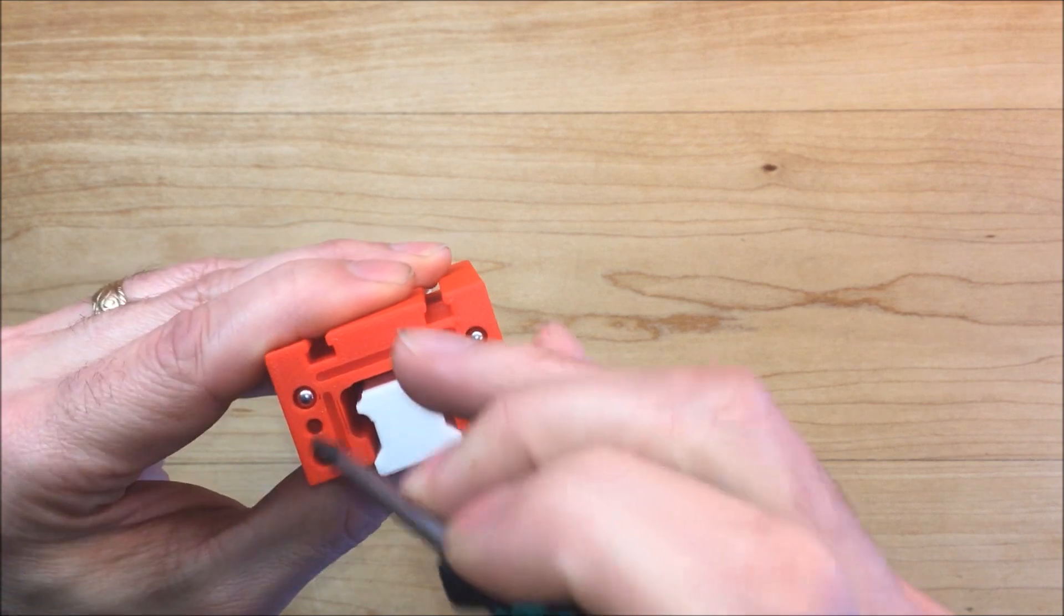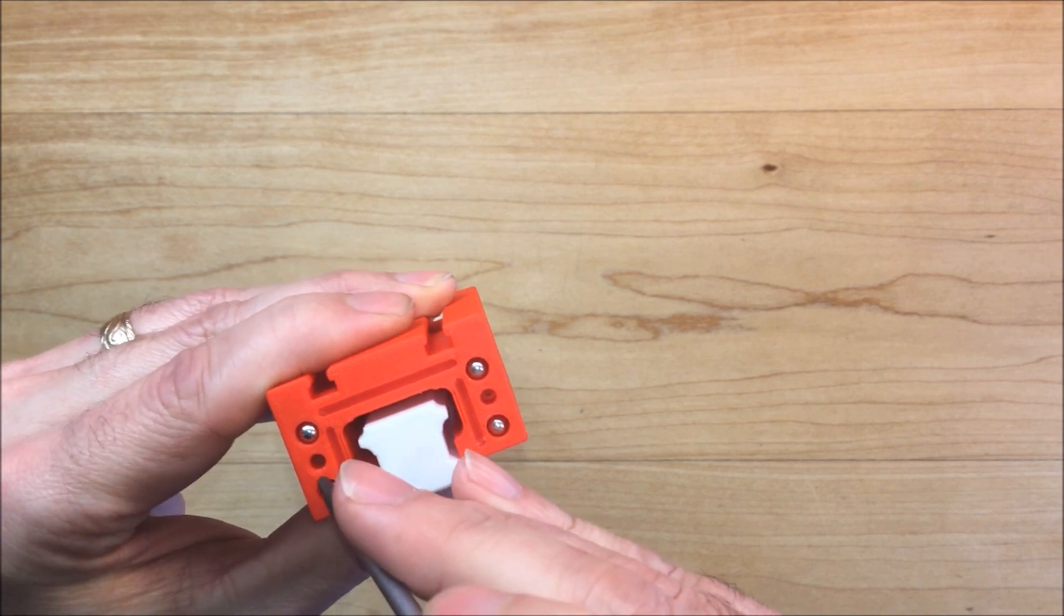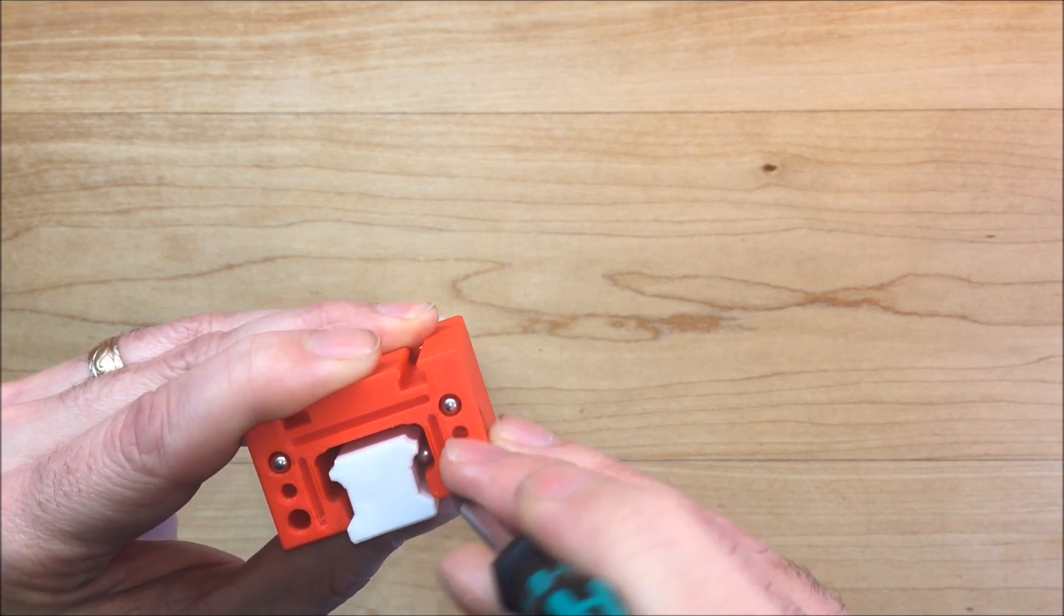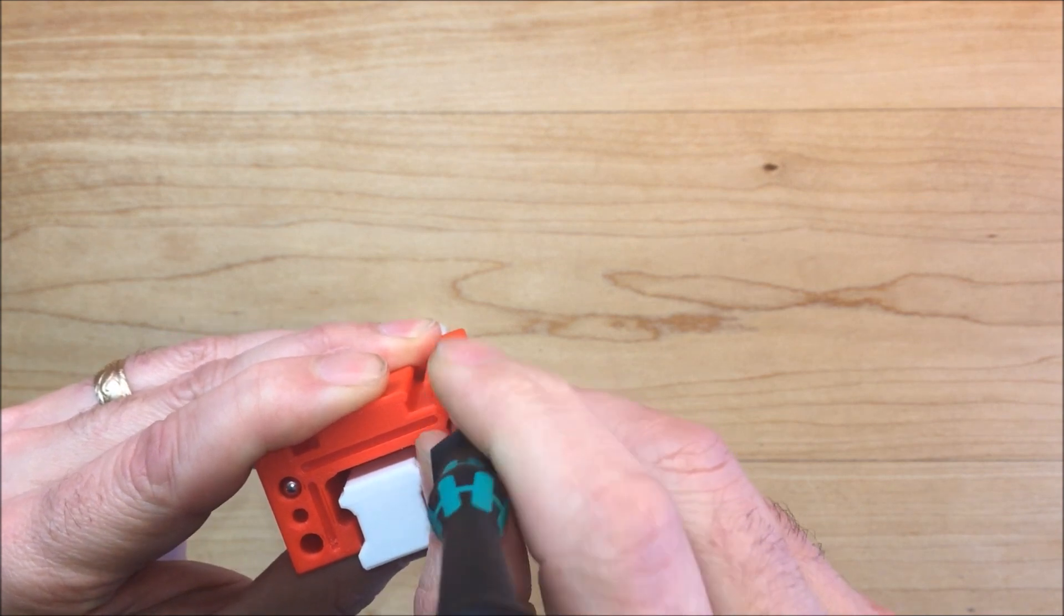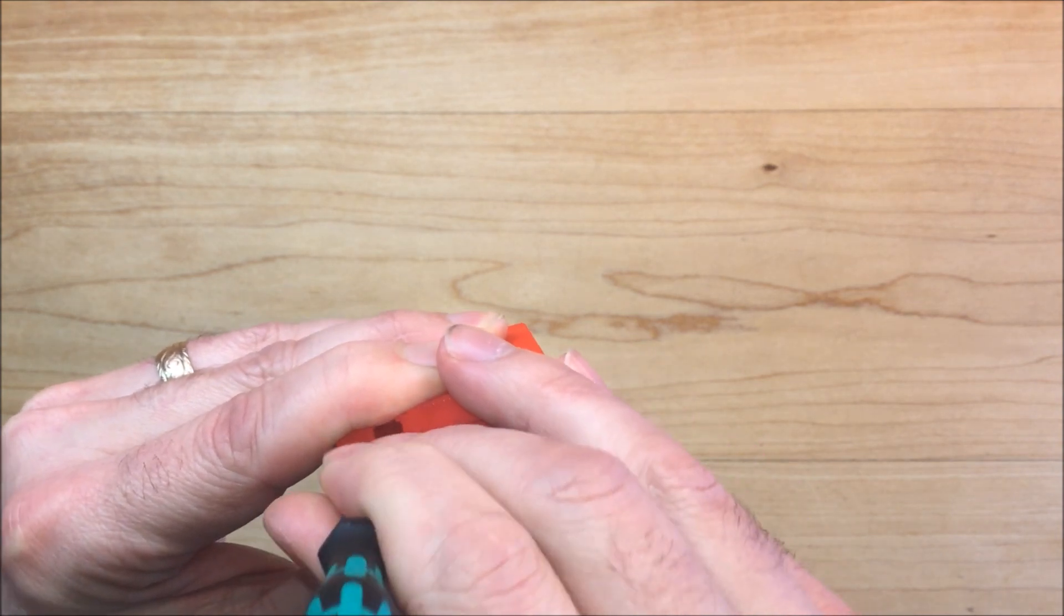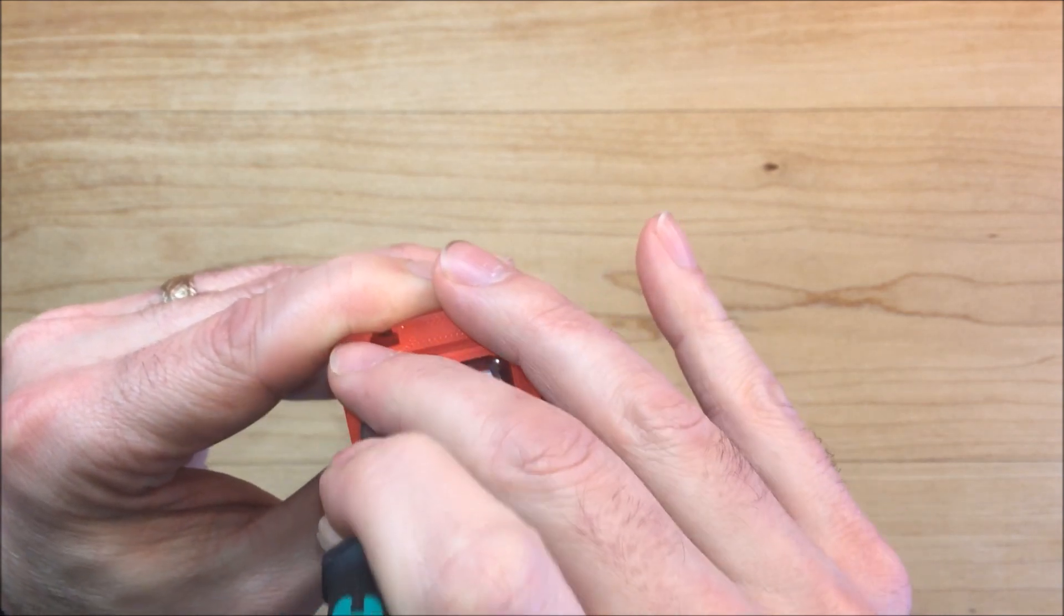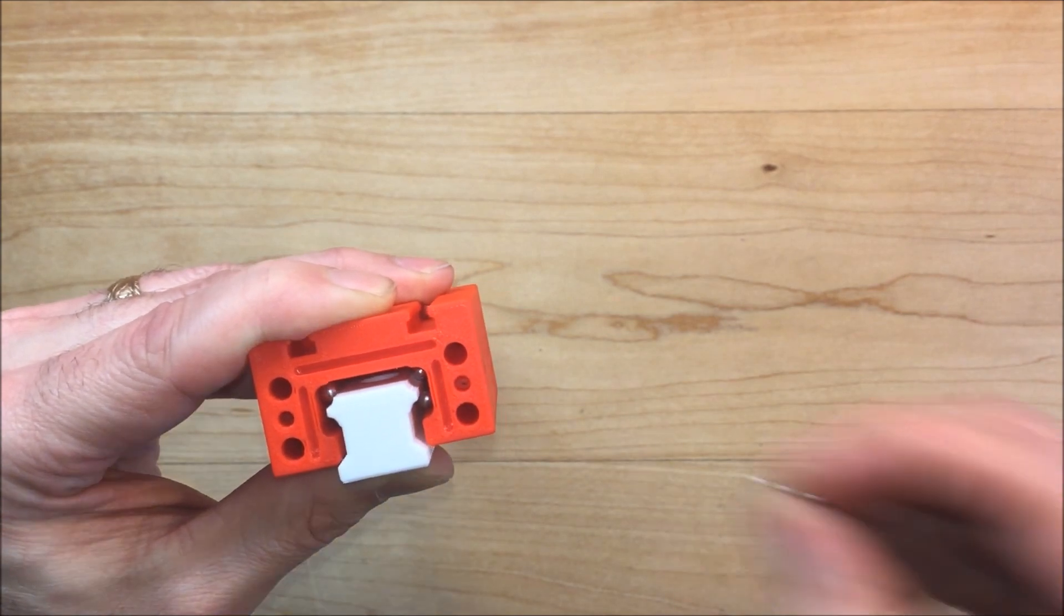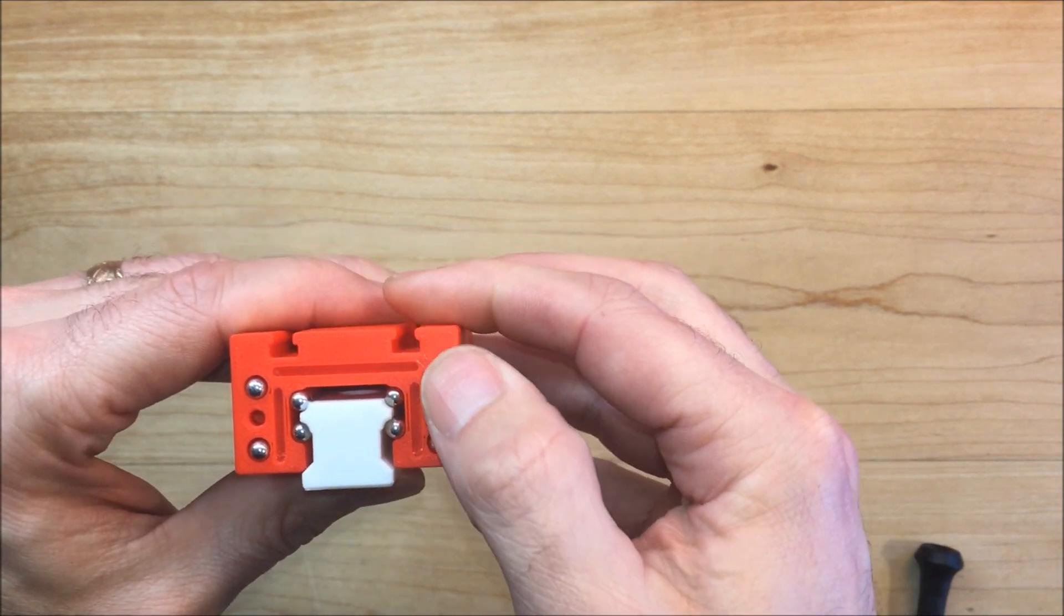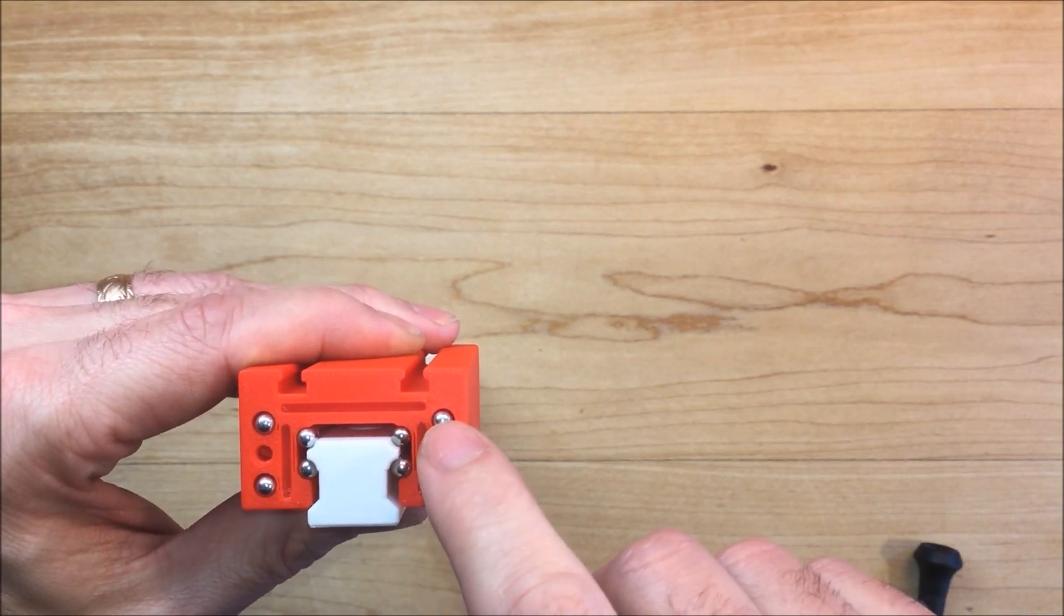Once you have the holes full you can push the bearings through. Then continue loading them. Alright, once you have it full we can move on to the next step. You can tell if they're full because if you push on one groove they should pop out the other.